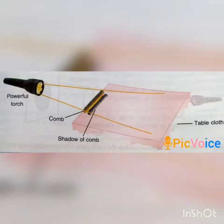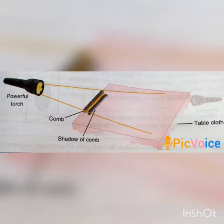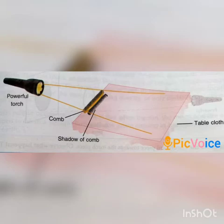Now, students, to see the shadow of anything, we can do one simple activity. We have to fix a comb vertically on one side of a large wooden table and cover the table with a tablecloth. Then send a beam of light from a powerful torch through the comb. With the help of a friend, pass a thin string through the comb and hold it straight. You can hold the string along the direction of the light rays and observe the direction along which light moves.